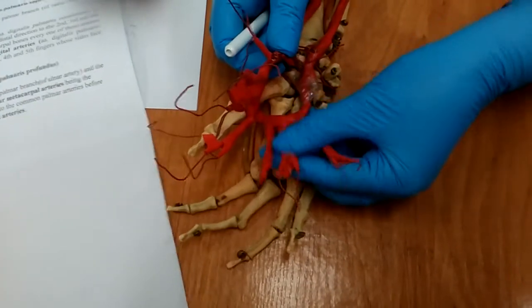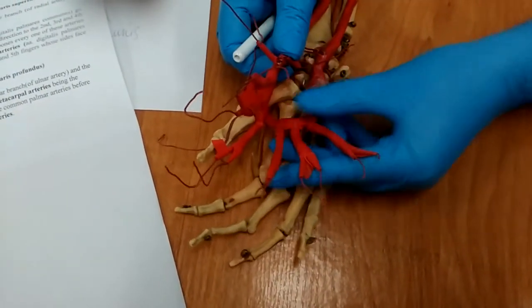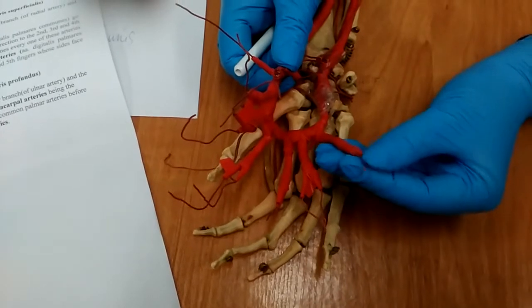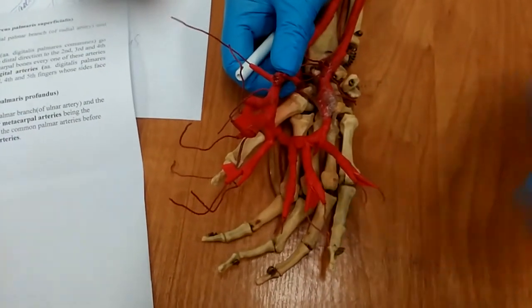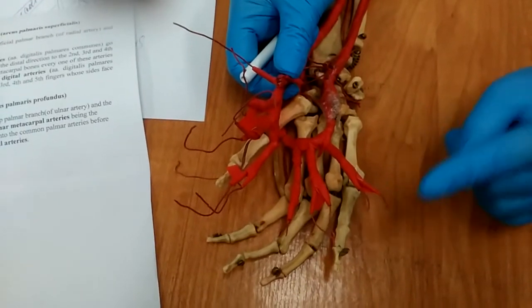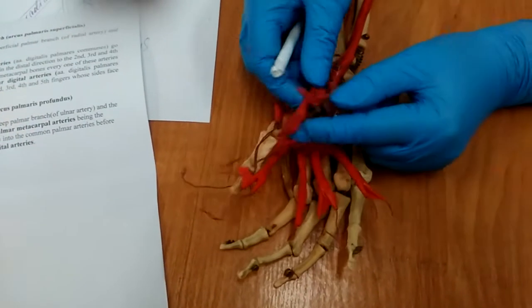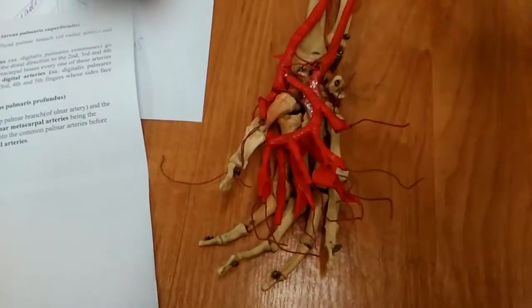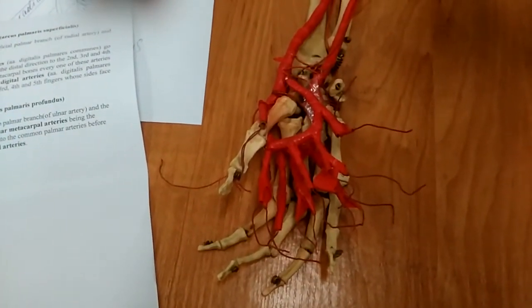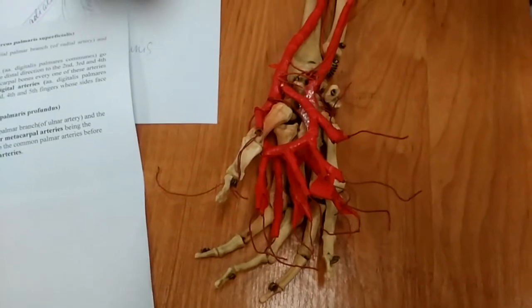The palmaris metacarpal arteries each consist of propria digital arteries. The propria digital arteries from the deep arcus and from the superficial arcus anastomose near the distal phalanges of our digitorum.